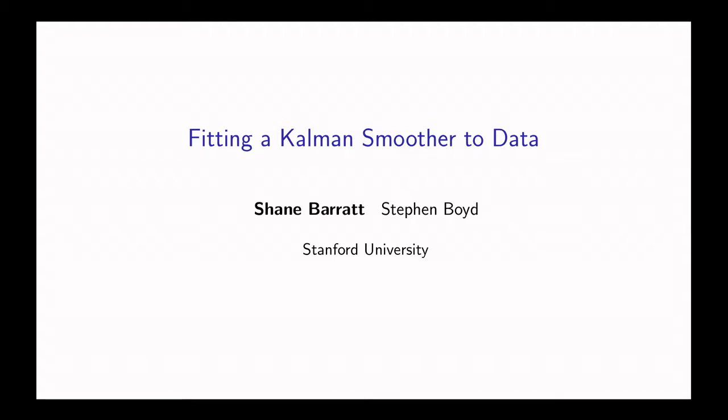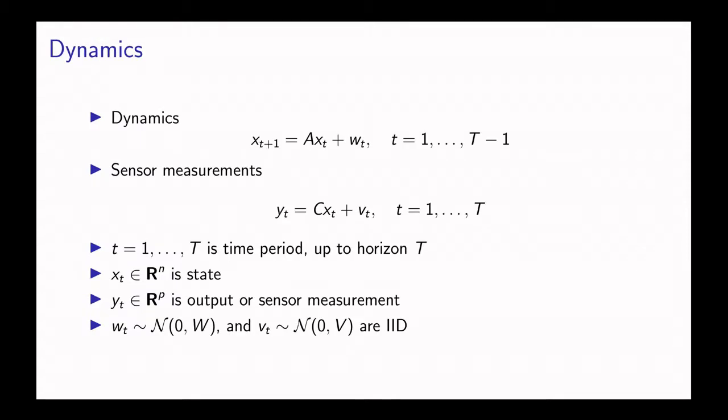First I'm going to talk about Kalman smoothing, what it is and how it's done. We're going to consider linear systems with dynamics given here, so x_t is the state and w_t is a random disturbance, and the matrix A is the dynamics matrix.